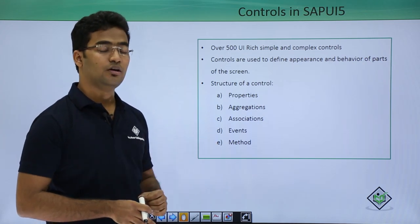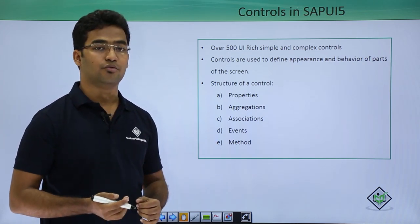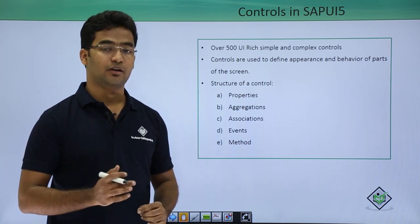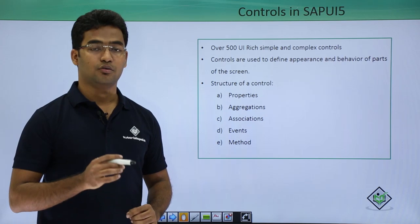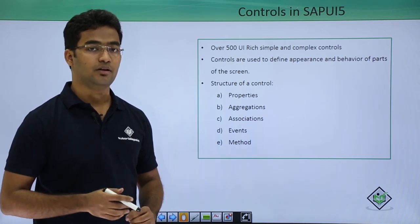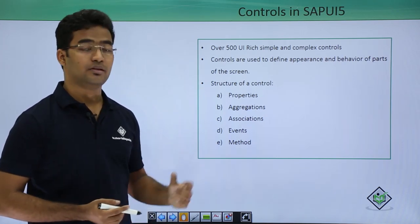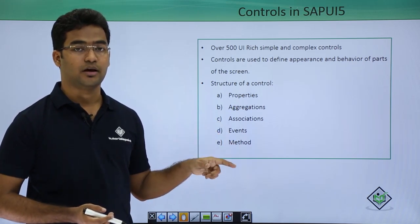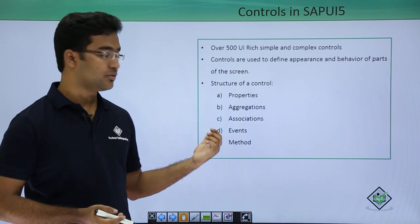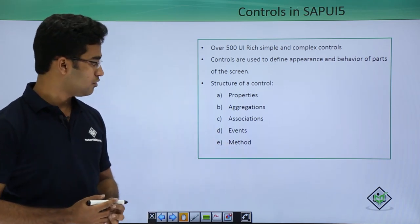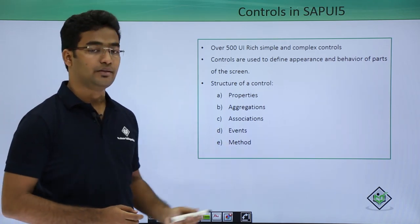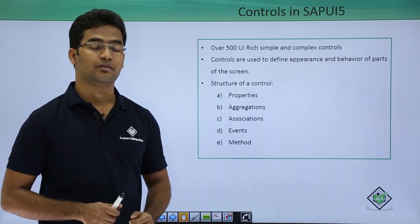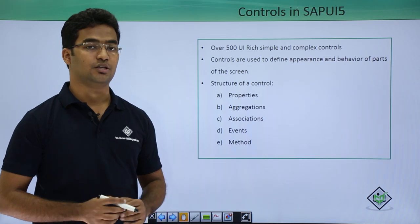Associations are there — basically one control could be associated with another item. Then we have events: if a button is clicked, the press event is the event for the button. For example, there is a search field and if we are writing something and pressing on the search button then it will trigger the search event. Similarly it also has methods — one particular control has a render method which is used to render the HTML.